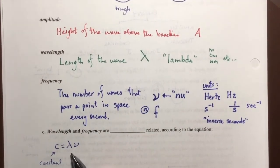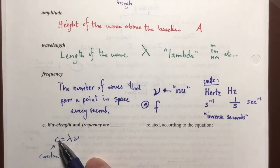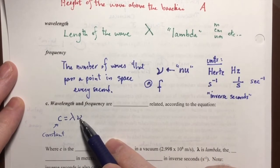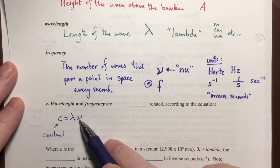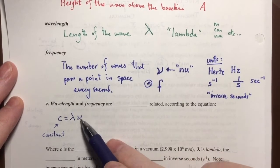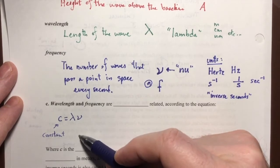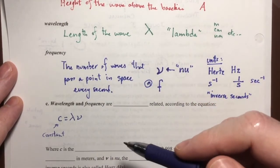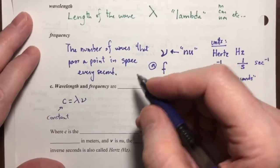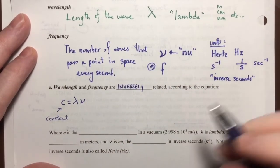Let's think about what this means for lambda and nu — for wavelength and frequency. If c is held constant and wavelength increases, what has to happen to frequency for c to remain constant? Frequency has to decrease, because as wavelength increases, frequency decreases to maintain that constant. So they are inversely proportional — inversely related according to that equation.